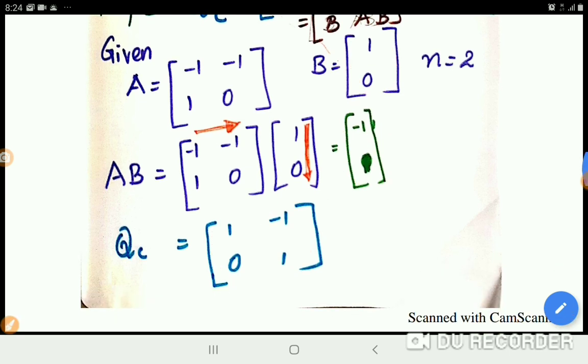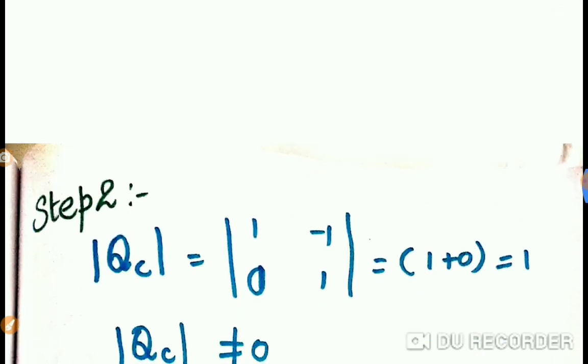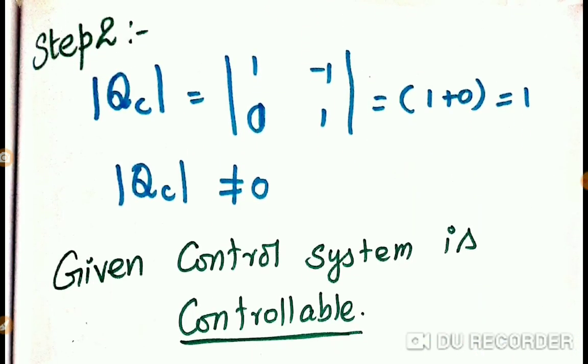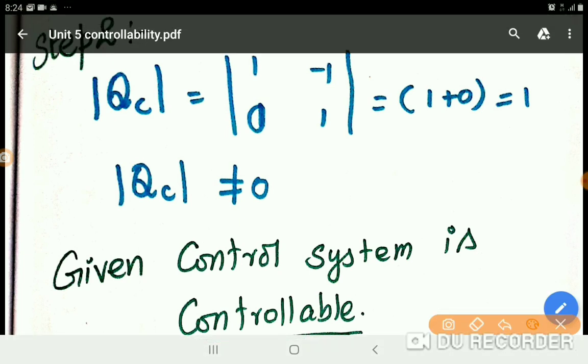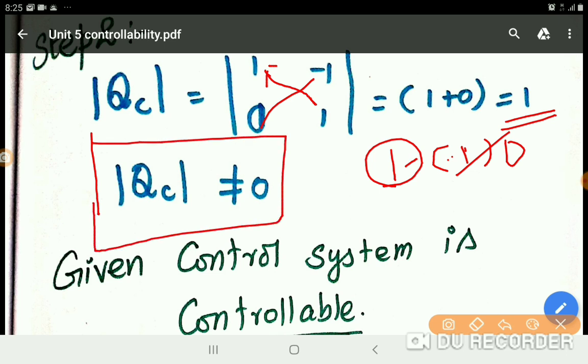That's it, the Kalman's first step is over. Then the second step: we need to find the determinant. The determinant is also very easy. The modulus of Qc: 1 into 1 minus (-1 into 0) equals 1. So determinant value, what it means: your modulus of Qc is not equal to 0. If so, the given control system state equation is controllable. So this is our finding.